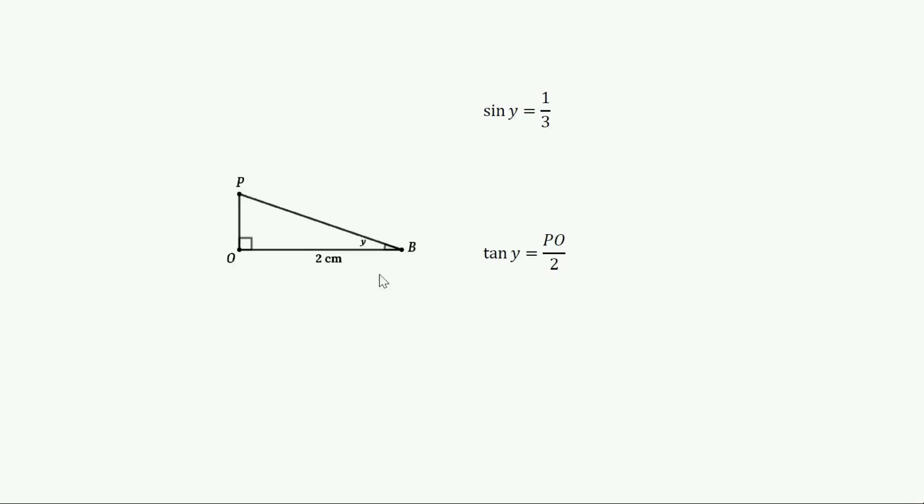Consider triangle POB. Here tan Y equals PO by 2. So, we get PO equals 2 times tan Y. From sin Y equals 1 by 3, we get tan Y equals 1 by 2 root 2.